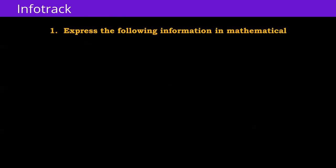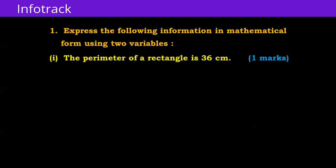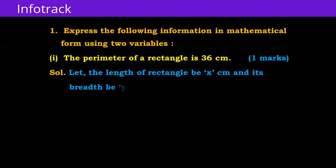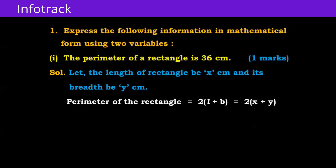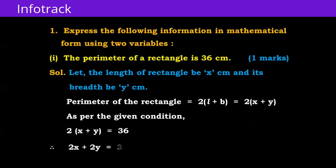Word problems based on simultaneous equations. Question number one: express the following information in mathematical form using two variables. The perimeter of a rectangle is 36 centimeters. Let the length of the rectangle be x and its breadth be y. The formula for perimeter of a rectangle is 2(l + b) = 2(x + y), and this perimeter is given as 36 centimeters, so as per the given condition.